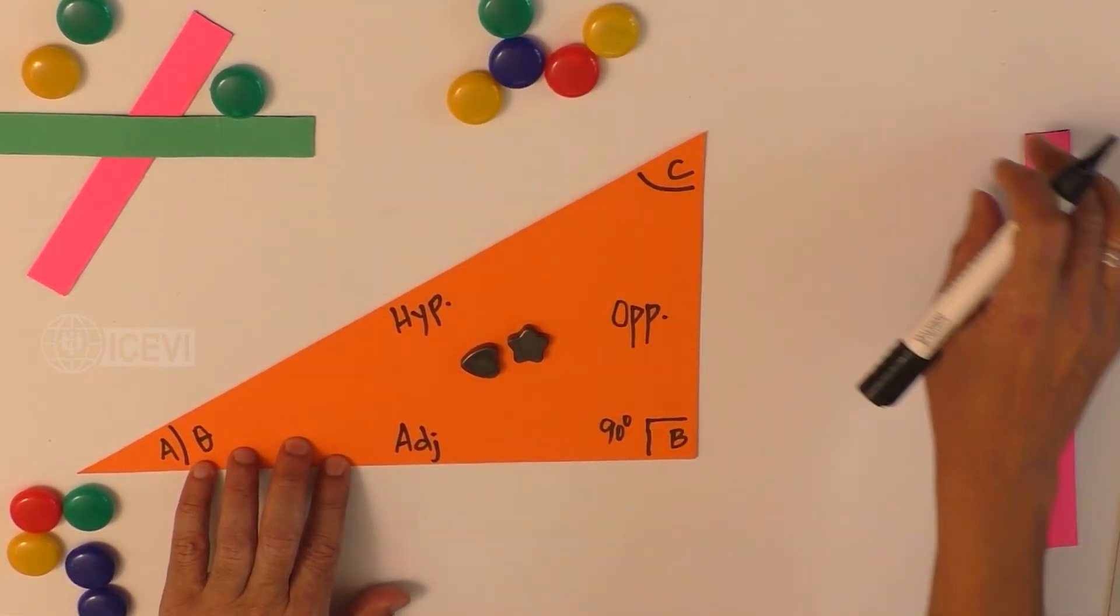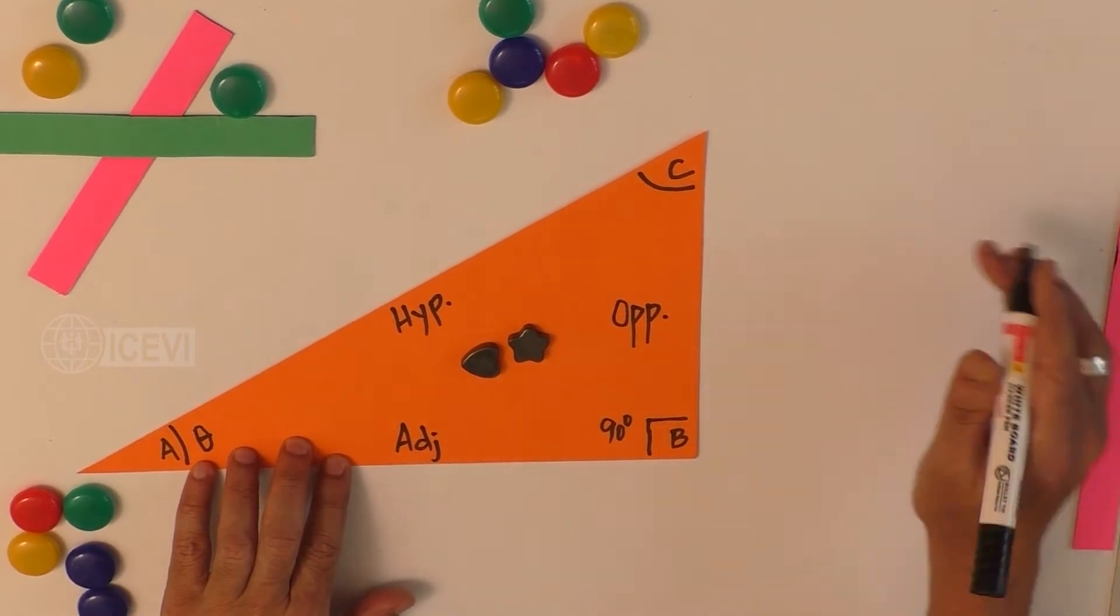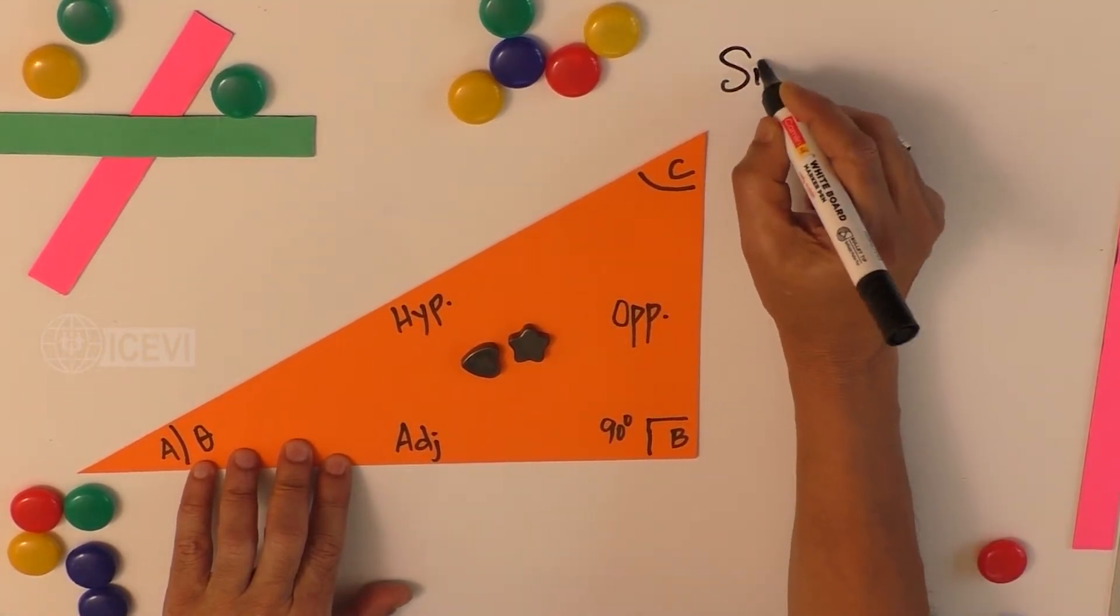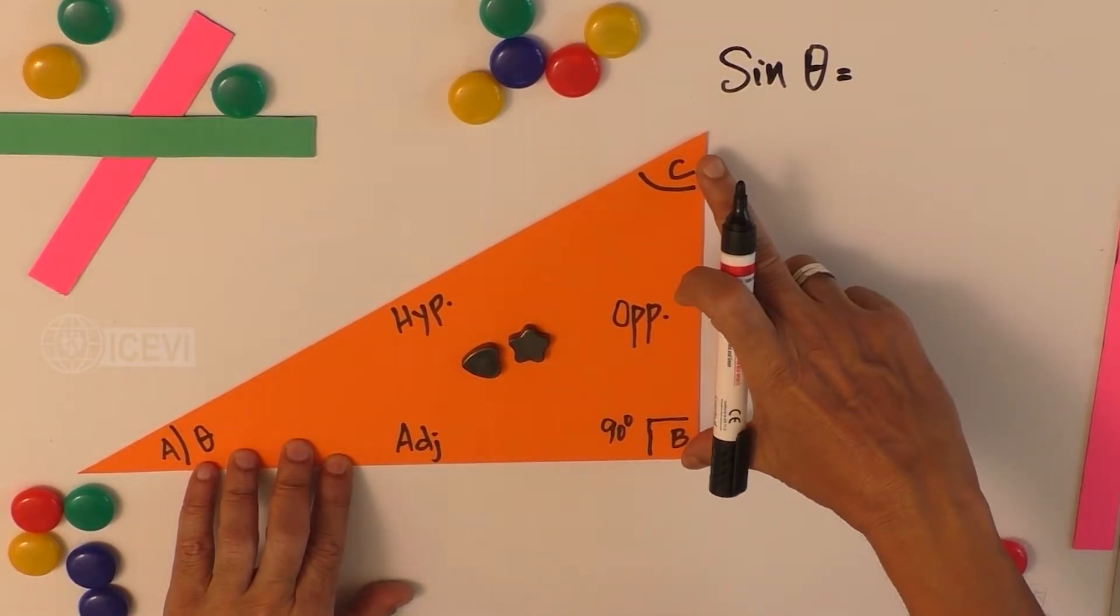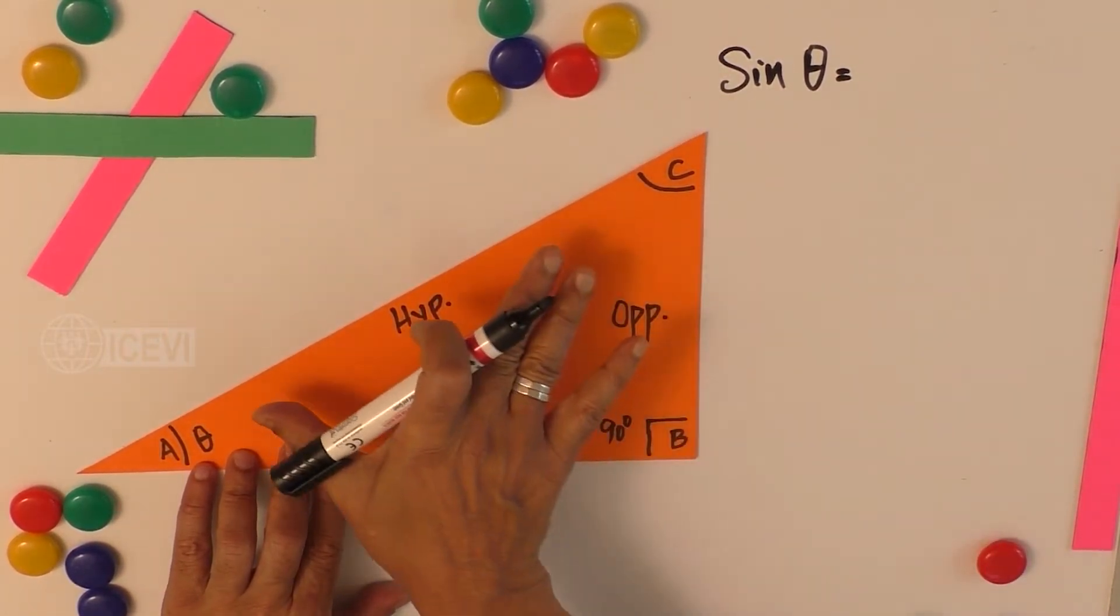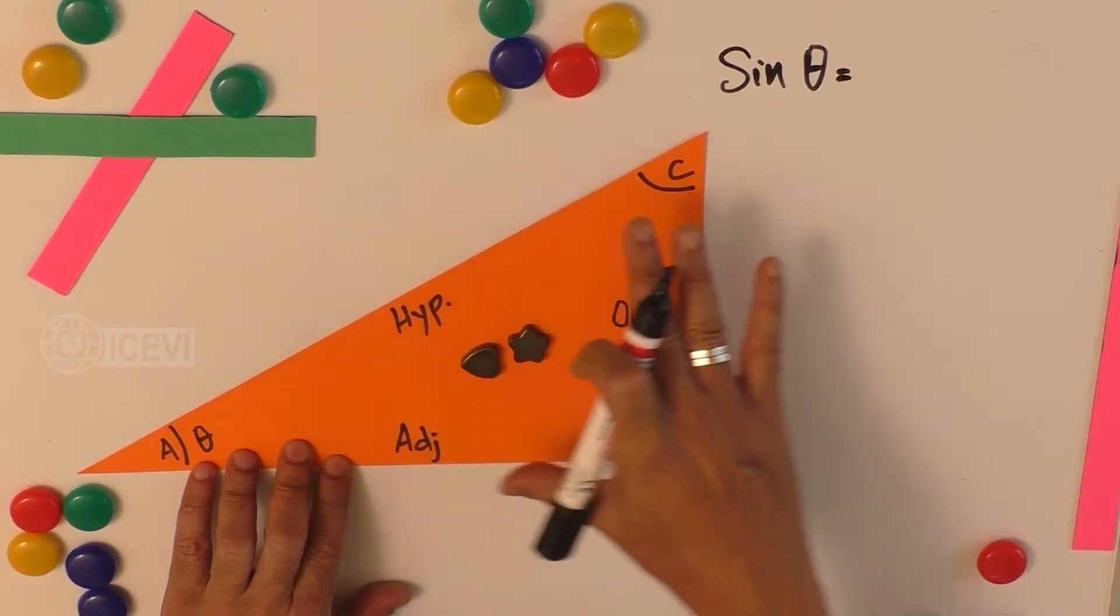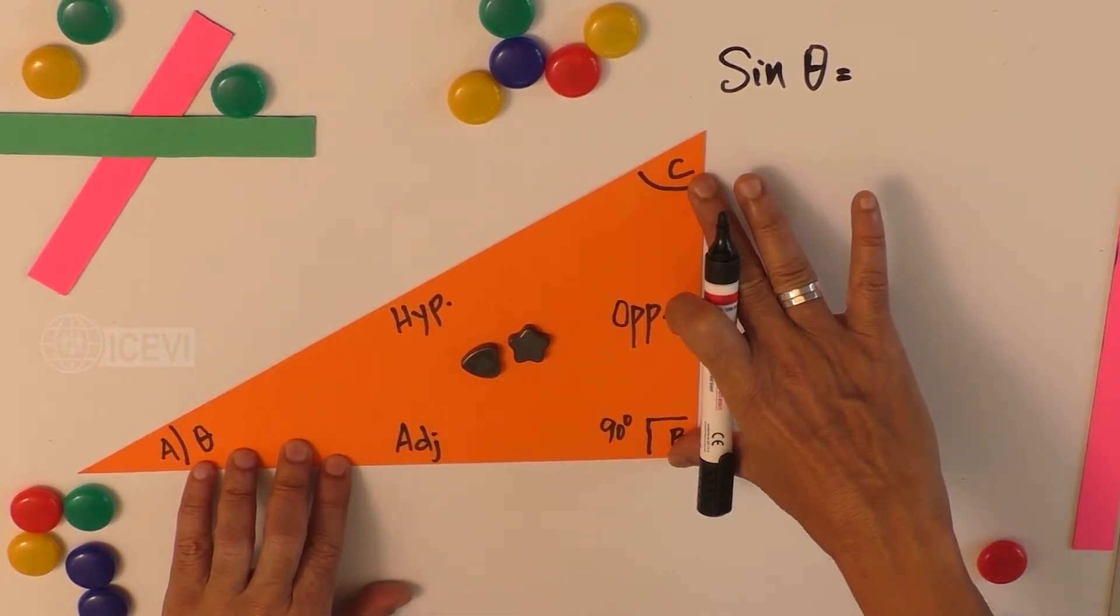So here, sine theta equals opposite divided by hypotenuse. So what is